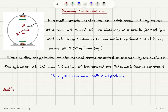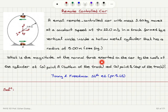Remote-controlled car problem. A small remote-controlled car with mass 1.6 kilograms moves at a constant speed of v equals 12.0 meters per second in a track formed by a vertical circle inside a hollow metal cylinder that has a radius of 5.00 meters. See the figure. The vertical circle has radius 5.00 meters and the car is traveling inside this circle. What is the magnitude of the normal force exerted on the car by the walls of the cylinder at point A, at the bottom of the track, and at point B at the top of the track?